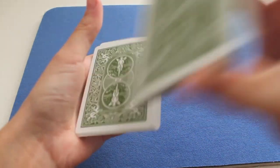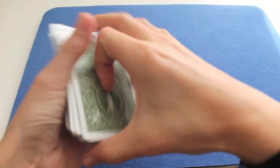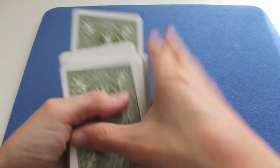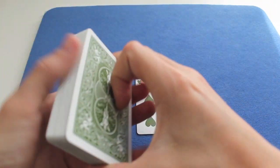First, the spectators shuffle the cards. Normal shuffle. They pick one, let's say for example, the six of hearts.